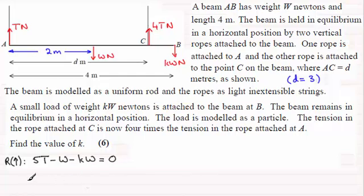And from this I can make T the subject, therefore T would equal, and if we add these two terms to the right hand side, we've got W plus kW, and that's all divided by 5. So we're going to need to return back to this equation later, so I'll number it 1.